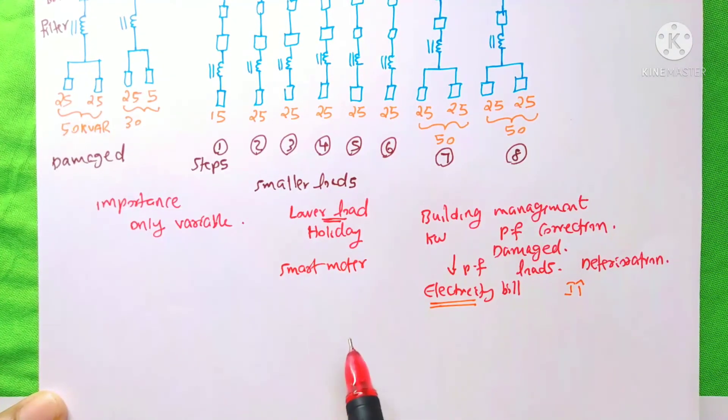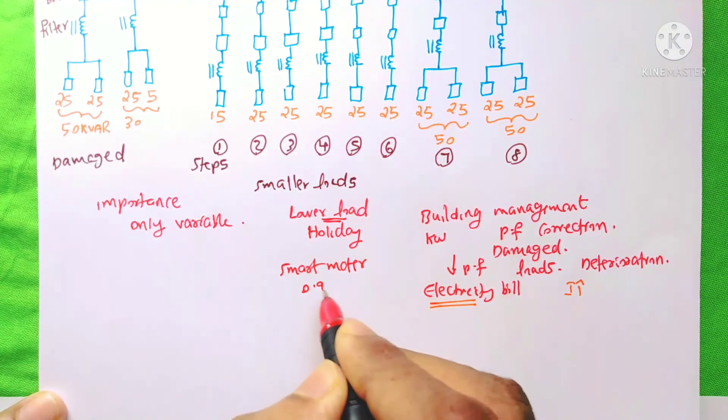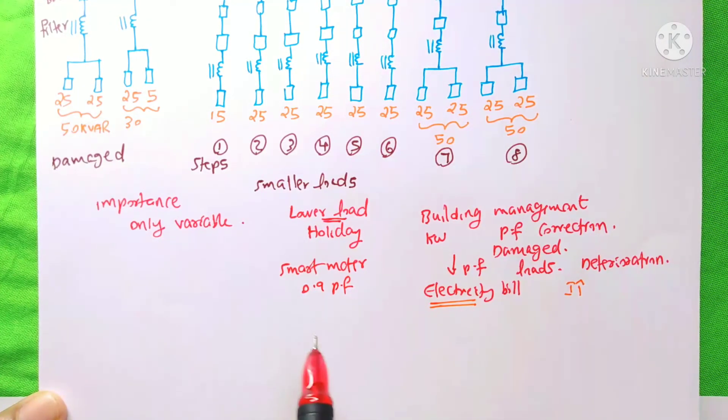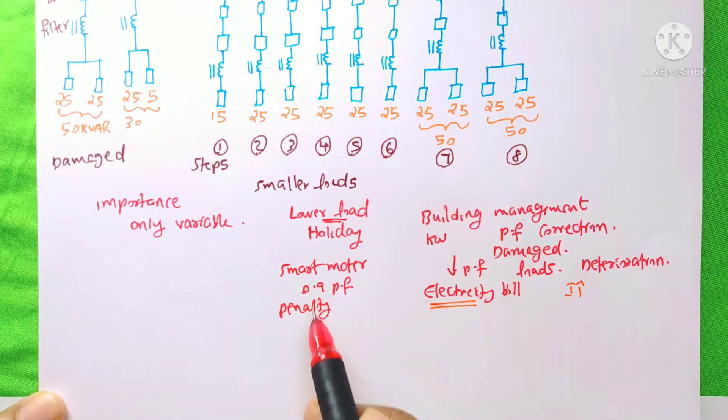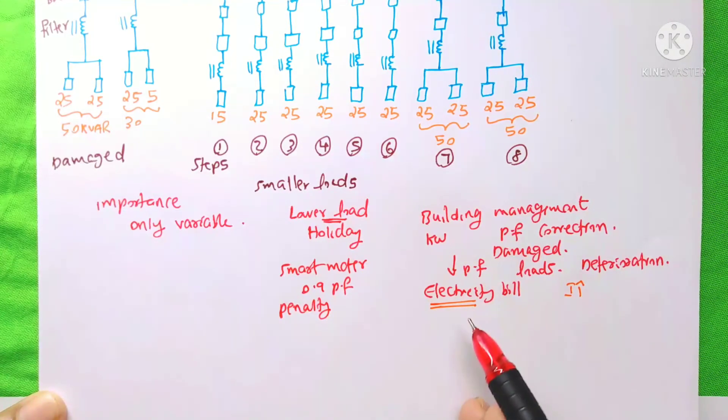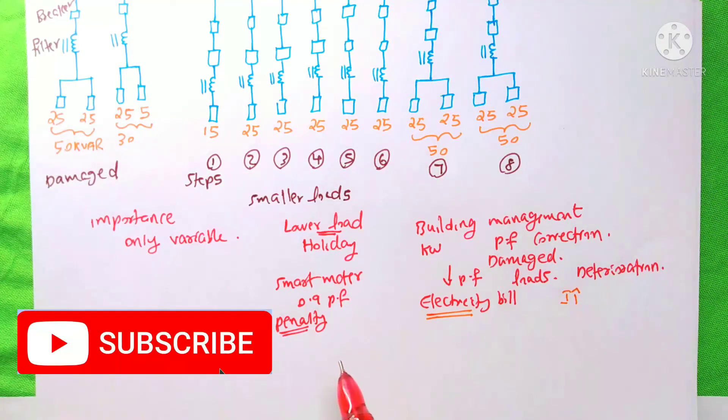And we know that when we can't achieve the 0.9 power factor or what is the regulation of the government, then we will likely get the penalty from the government. At this stage, we know that our power factor is less. So we will get penalty from government definitely.